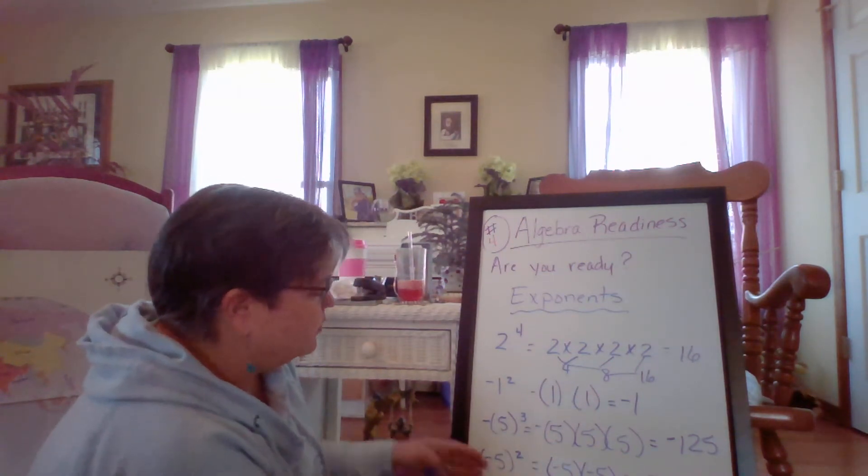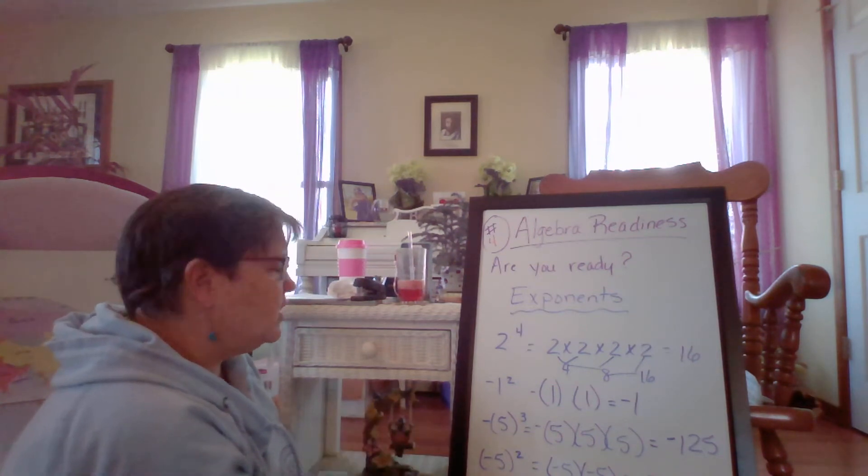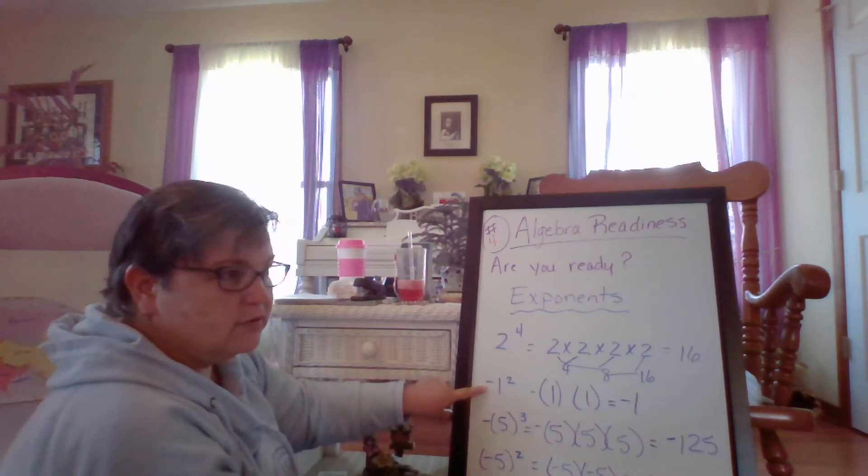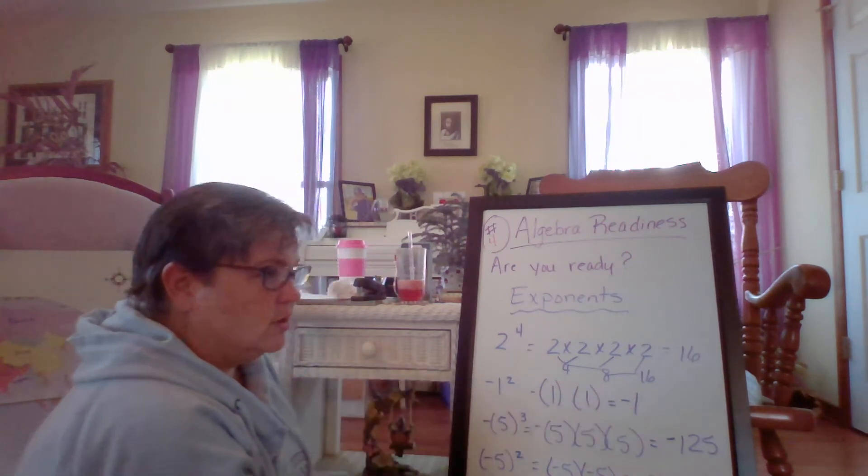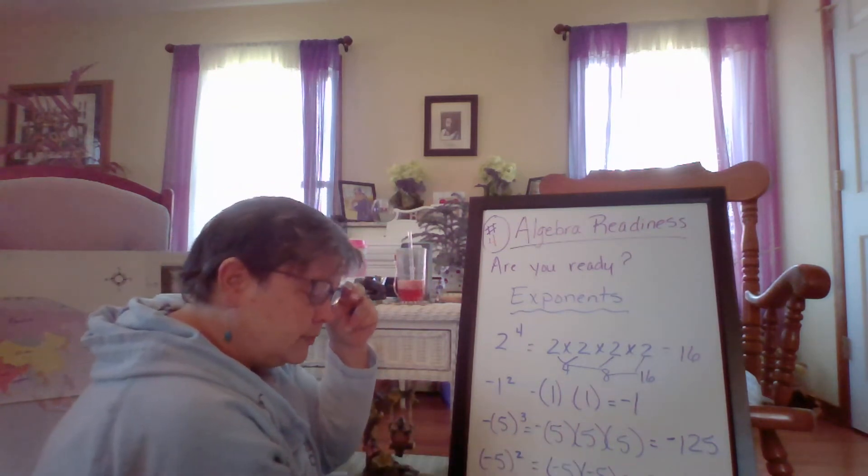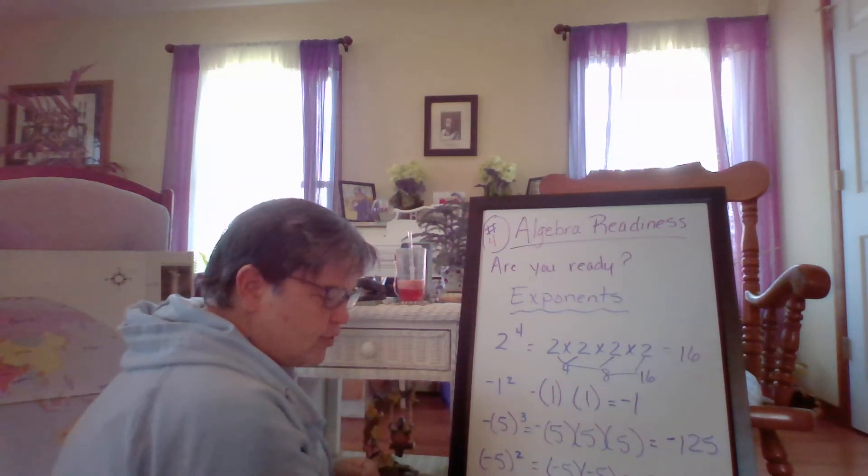So negative five times negative five is positive 25 because two negatives when multiplied will give me a positive. So you have to be careful when you're doing these problems as to whether or not you carry the negative to the answer or if it is included in the answer. So it's a little bit tricky.